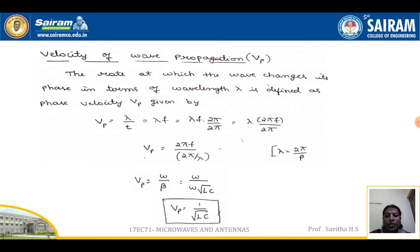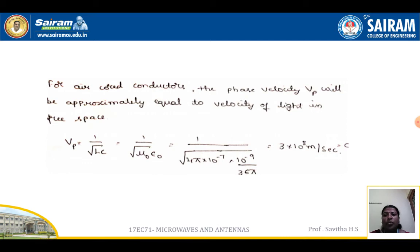So vp is equal to 2πf — which is omega — times lambda in the numerator, divided by 2π. Since 2π divided by lambda is beta, we get vp is equal to omega divided by beta. And since beta equals omega times root LC, vp equals 1 divided by the square root of LC — the velocity of wave propagation.